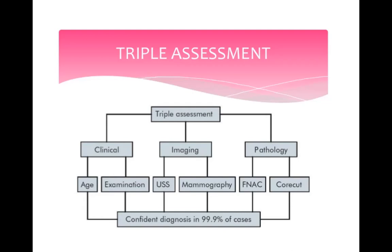So the next best investigation will be mammography, which is preferable after the age of 40 years. MRI is reserved for certain cases — for example, if there is a recurrence after surgery for malignancy, whether it was breast conservation surgery, a lumpectomy, or a mastectomy, and again there is appearance of a lump. At that time, ultrasound and mammography won't be able to clearly differentiate whether this is a recurrence or old scar tissue. In these cases, MRI will be a better choice.